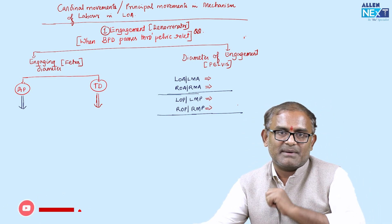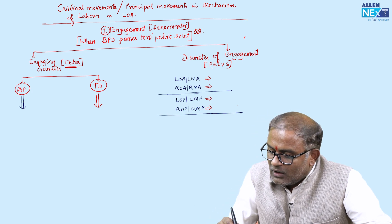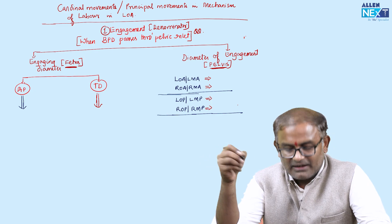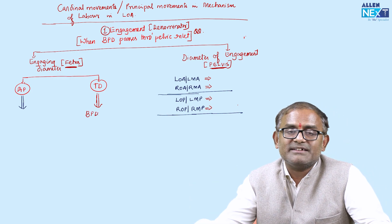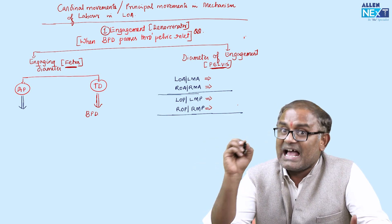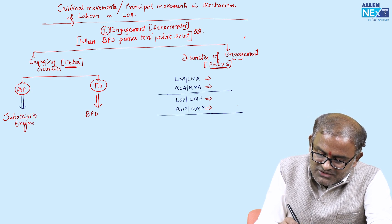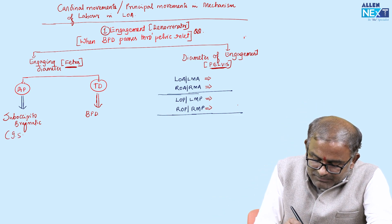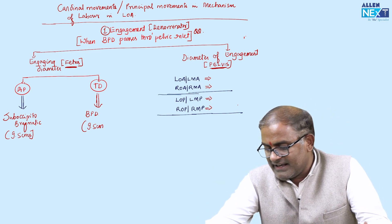This has a diameter of engagement. The engaging diameter is always related to the fetus, while the diameter of engagement is always related to the pelvis. The engaging transverse diameter of the fetal skull is the biparietal diameter. The engaging AP diameter depends on the attitude of the fetal head — in a well-flexed attitude it is suboccipitobregmatic, which is 9.5 cm, and the biparietal diameter is also 9.5 cm.